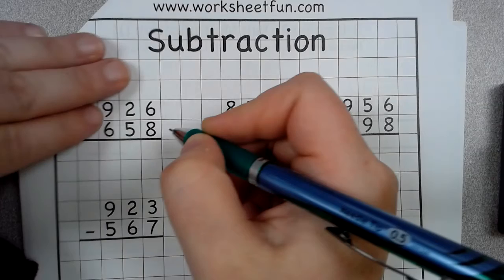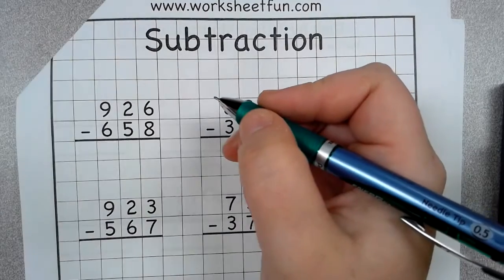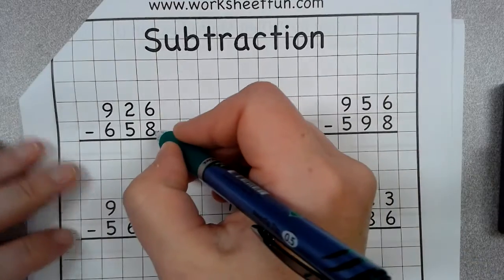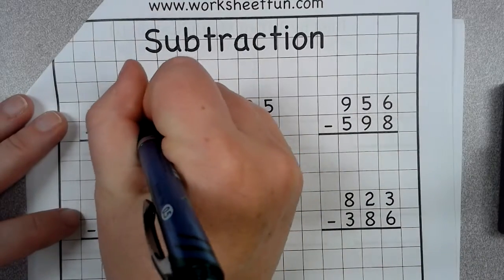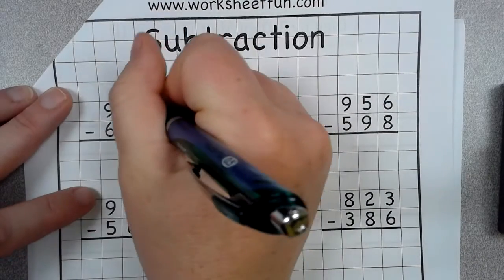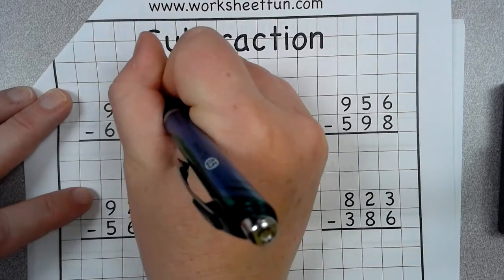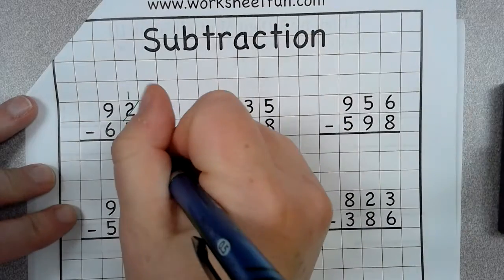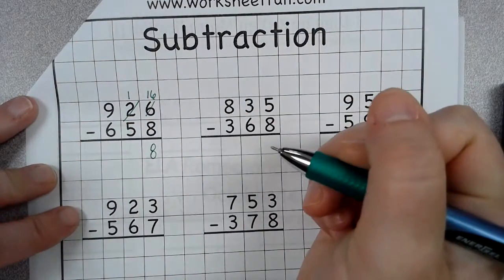So, we're going to have - I cannot take 8 away from 6 because 926 minus 658, we have to borrow. So, I'm going to go right here and borrow from my 1, and then this turns into 16. I can take 8 away from 16, and that's 8.